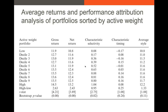The final study I want to show you is this paper by Doshi et al., 2015. They do something a little different than what Fama and French do in their 2008 paper. They sort portfolios into 10 deciles and look at the gross and net returns, but they break up the returns into selectivity and timing characteristics.